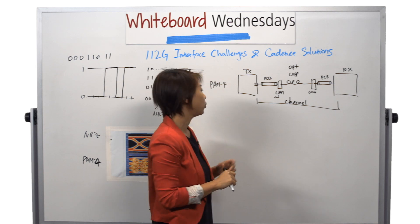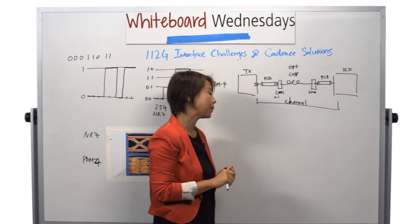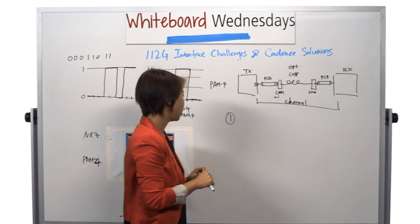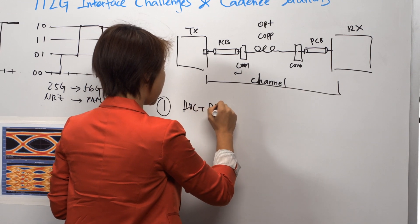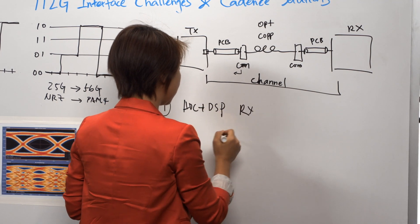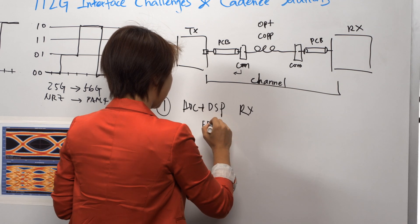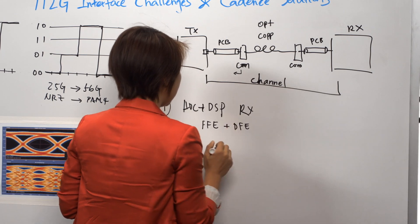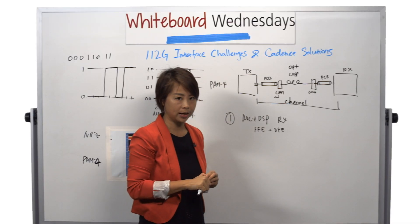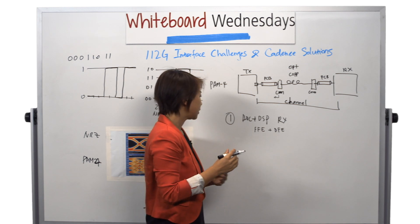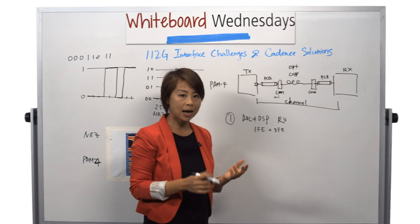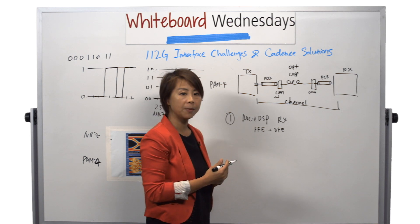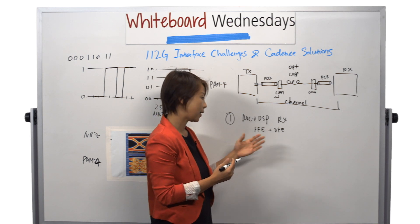So how do we combat these challenges in our IP? Number one, in Cadence, we incorporate an ADC plus DSP architecture for a receiver that implements multiple types of FFE and DFE. So converting the signal to digital domain, and then doing the signal processing in digital domain allows us to gain a lot of information about the channel, which gives us more margin, the capability of driving longer channels, and that's the benefit.